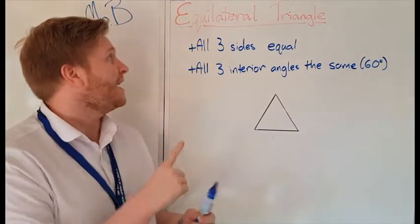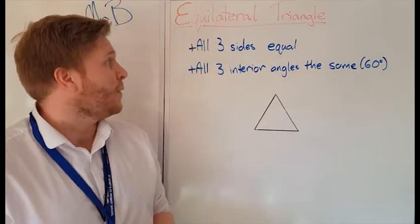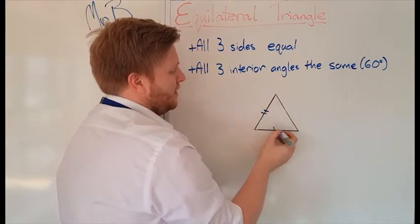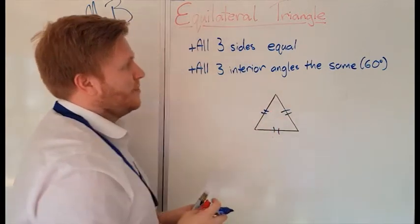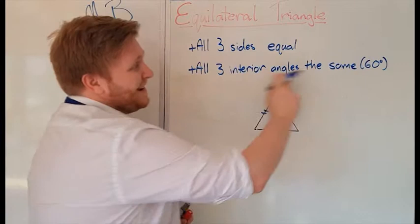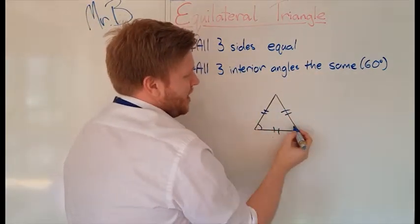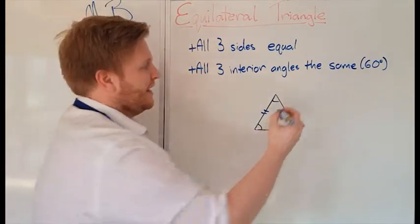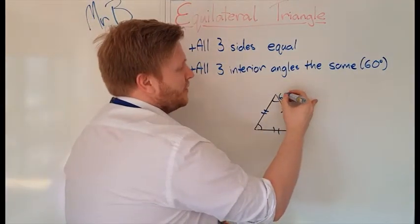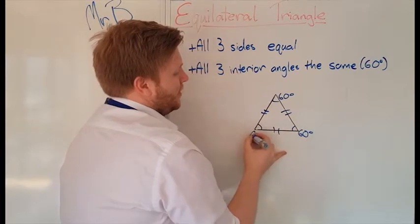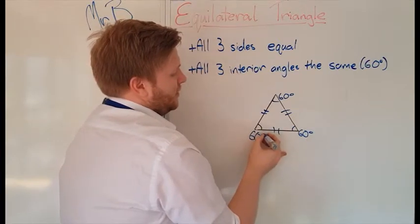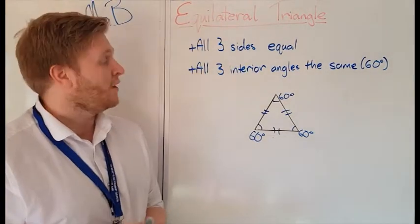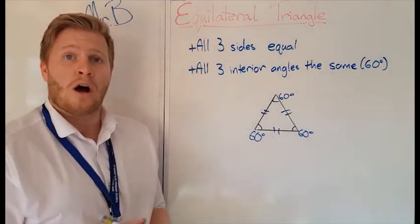Okay, so now we're looking at equilateral triangles. Now equilateral triangles, all three sides are the same length. So this side here, this side here, and this side here, all the same length. And all three interior angles, so the angles that we have here, they are all the same. And because we know that angles inside a triangle are 180 degrees, that means we know that all these are 60 degrees. So all the sides are the same and all the interior angles on an equilateral triangle are the same.